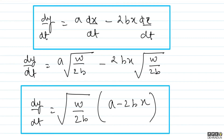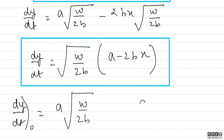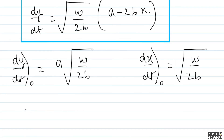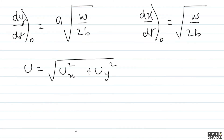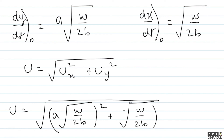At the origin, putting x = 0, dy/dt becomes a·√(w/2b). And dx/dt at origin is the constant √(w/2b). So to find the net velocity, we use: u = √(ux² + uy²) = √[(a·√(w/2b))² + (√(w/2b))²]. Let us simplify this: u = √[(w/2b)·a² + (w/2b)] = √[(w/2b)·(1 + a²)].